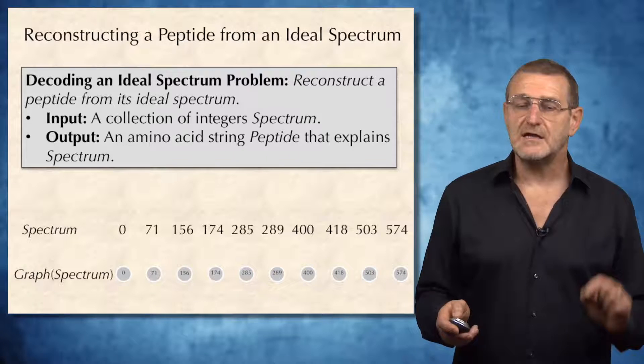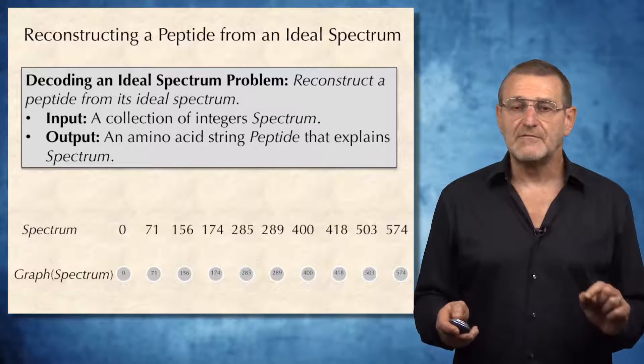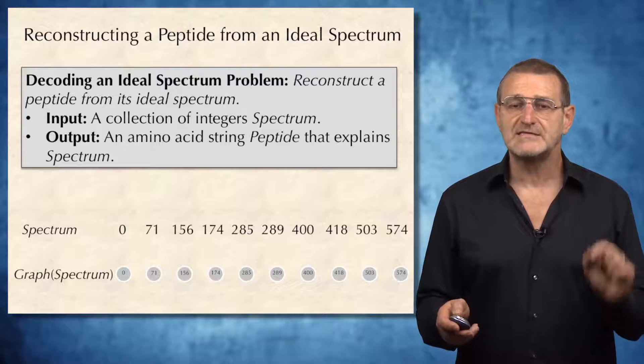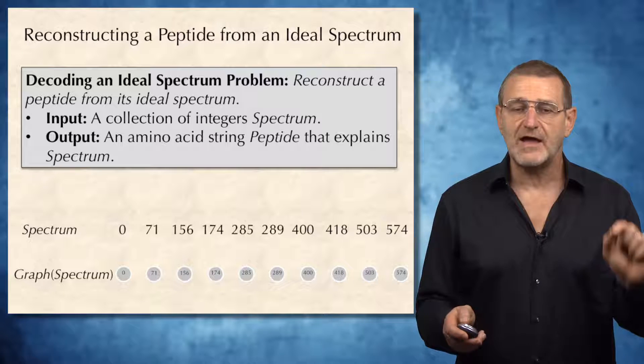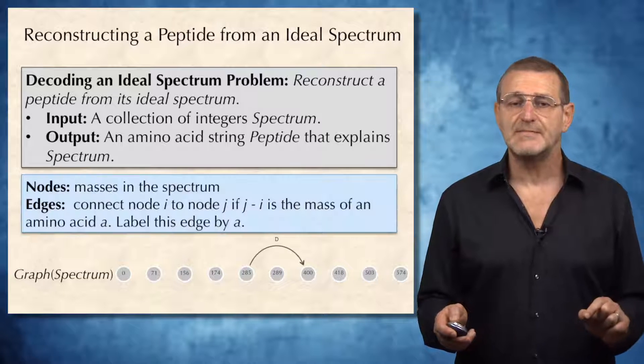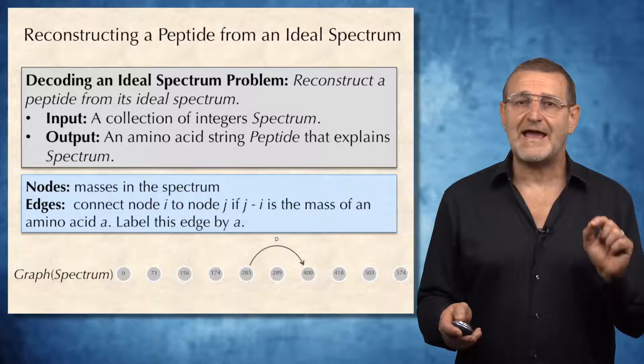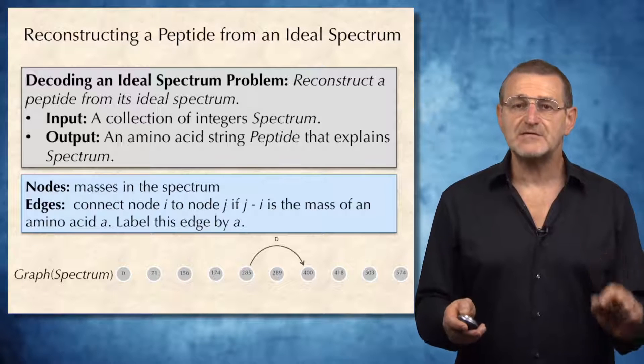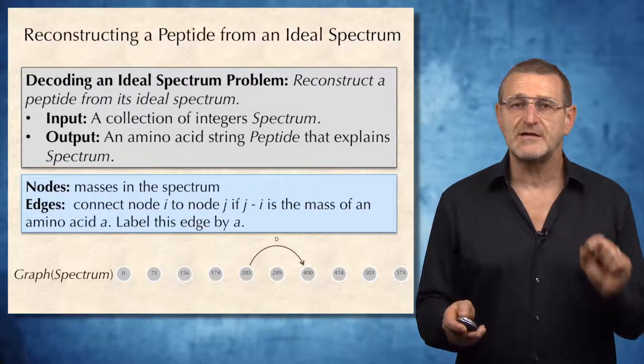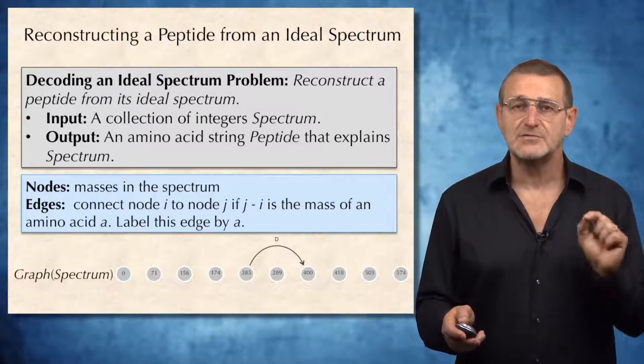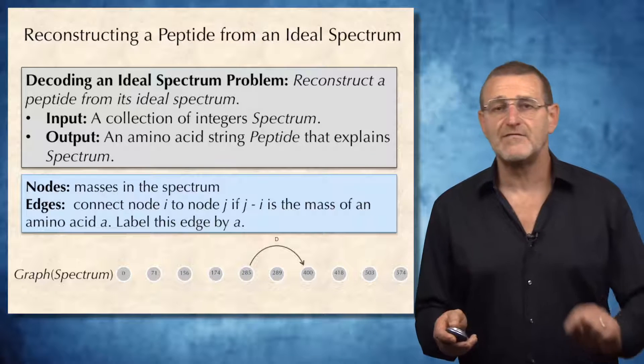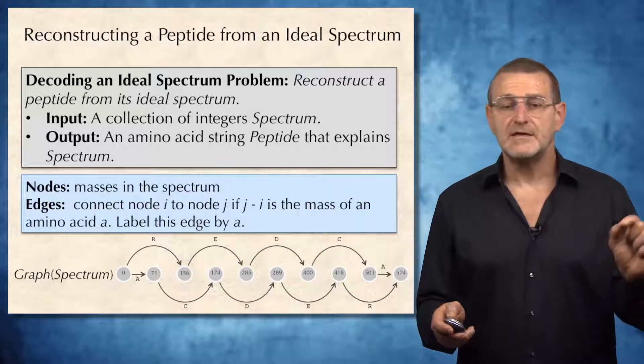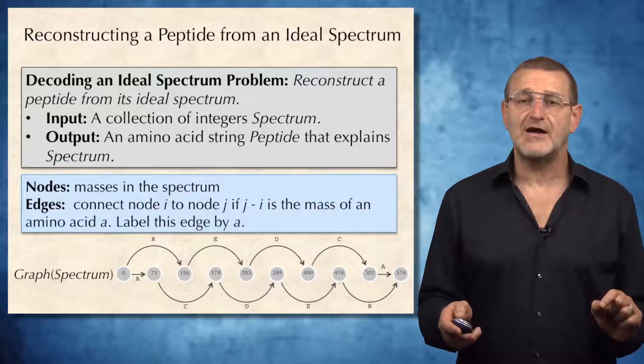To solve it, let's construct a graph. We will form a set of nodes of this graph by designing a single node for every element of the spectrum. And we will construct edges of the graph by connecting two nodes if the difference between their corresponding labels is equal to the mass of amino acids. And we will label this edge by the mass of this amino acid. Here is the graph we construct for our ideal spectrum.